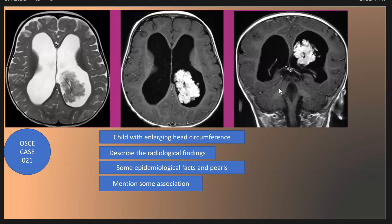It is most commonly located in the trigone of the lateral ventricle in children, and is also seen in the fourth ventricle. It causes hydrocephalus due to excessive production of cerebrospinal fluid.